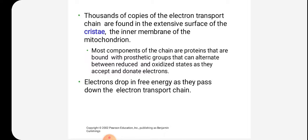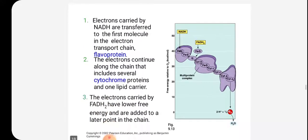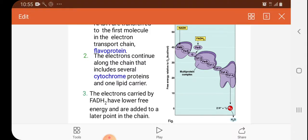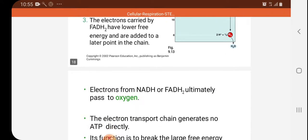Electrons drop in free energy as they pass down the electron transport chain. Electrons carried by NADH are transferred to the first molecule in the chain, the flavoprotein FMN. Electrons continue along the chain through several cytochrome proteins — including FES, Q, Cytochrome B, FES, Cytochrome C1, Cytochrome C, Cytochrome A, and Cytochrome A3 — and one lipid carrier. Electrons carried by FADH2 have lower free energy and are added at a later point — entering from the second complex onwards. Electrons from both NADH and FADH2 ultimately pass to oxygen.